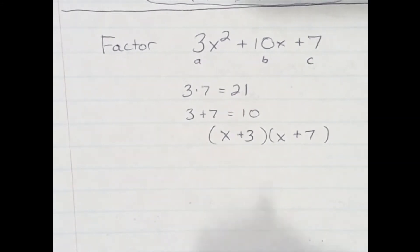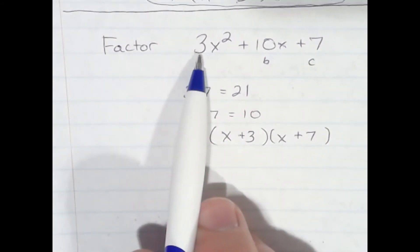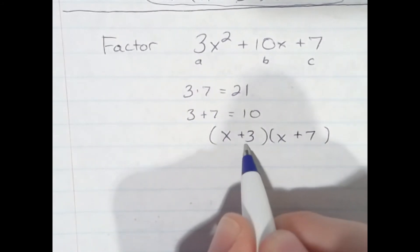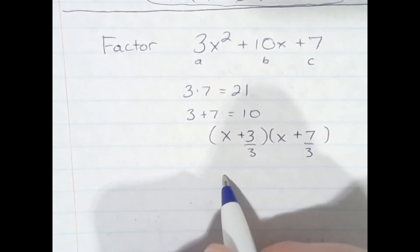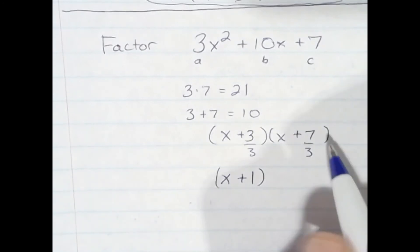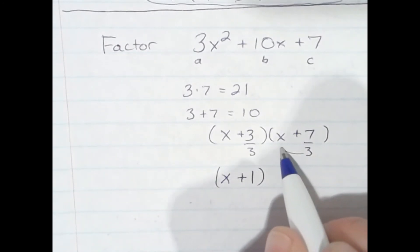I'm going to go back and use the A number, which is 3, and divide each of these numbers by it. If it divides, great. 3 over 3 is 1, got it. If it doesn't, we're just going to move that 3 in front of that x.